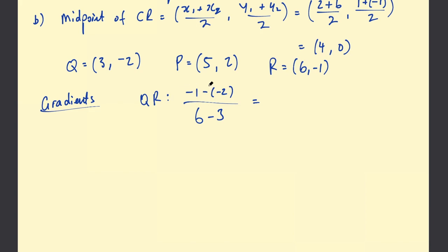Okay so -1 subtract -2. -1 plus 2 is 1. 6-3 is 3. So that's a gradient of 1/3 for QR.